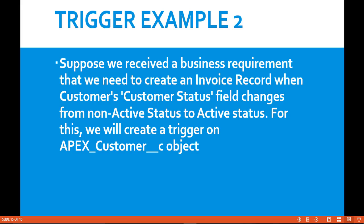Hello, this is Deepika from mytutorialrack.com. In the previous example, we did some hands-on with triggers and there was an issue. Every time the status of the customer record was active, no matter what the previous status was, every time you saved that existing record without making any changes, it was creating a new invoice record. We don't want that — we wanted it to create an invoice only when the customer status changes to active from a non-active status.